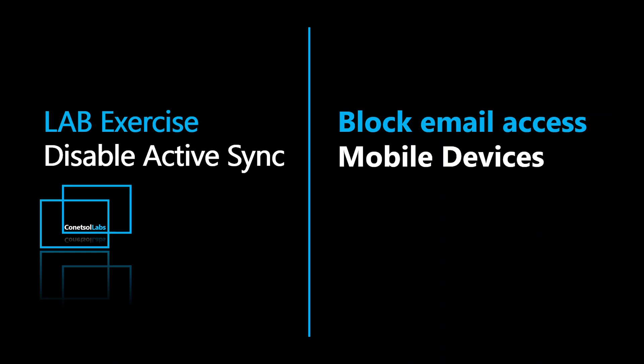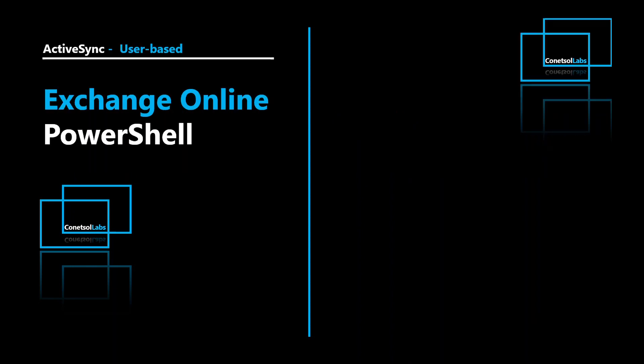Hello friends, welcome to the lab exercise. In the previous video we had already gone through Active Sync protocol and mailbox plans. We have to implement organization security use cases for mobile devices. Now we will practice how to enable or disable Active Sync protocol for a specific user or upon new mailbox creation using different methods and techniques. Let's go through a few PowerShell commands before going to the lab exercise.